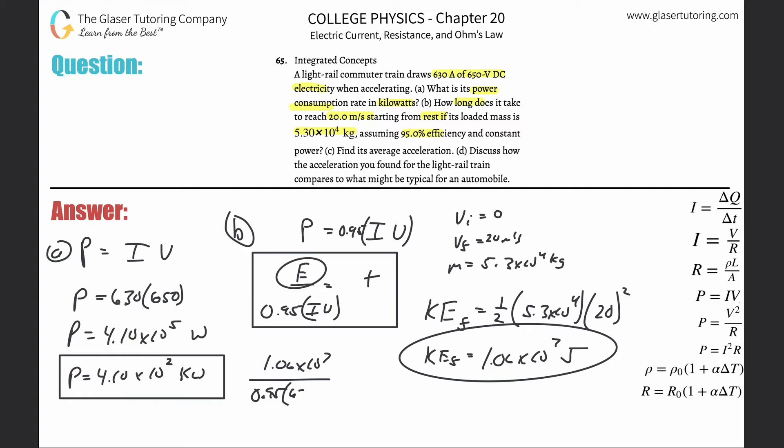Times the current which was 630, times the voltage which was 650, will equal now the time. So plug it on in: divided by 0.95 times 630 times 650. So about 27.2 seconds. That's the time. That's letter b.